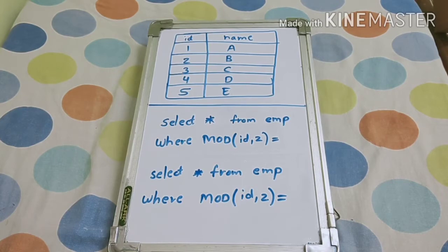Consider this example, a very simple example. Here I've mentioned ID and name: 1, 2, 3, 4, 5 and A, B, C, D, E as a name. So if we consider this table as EMP.